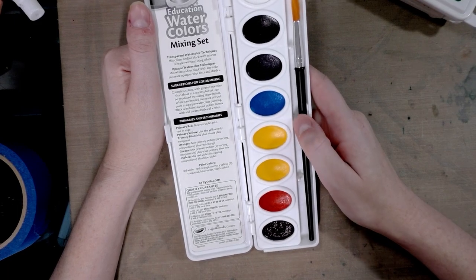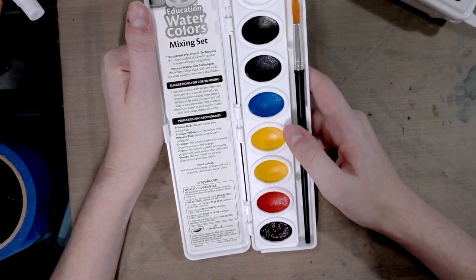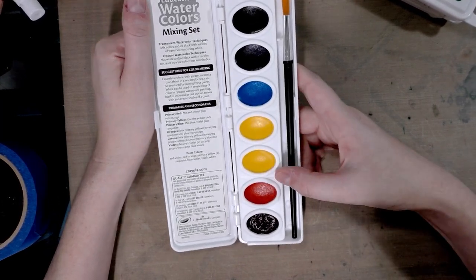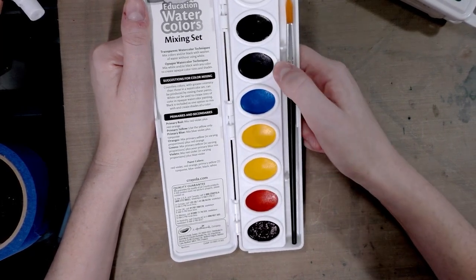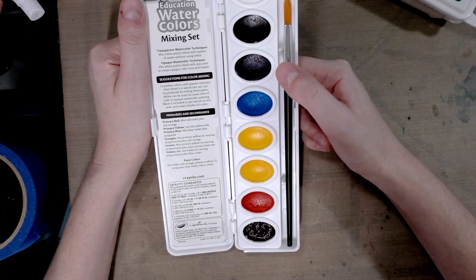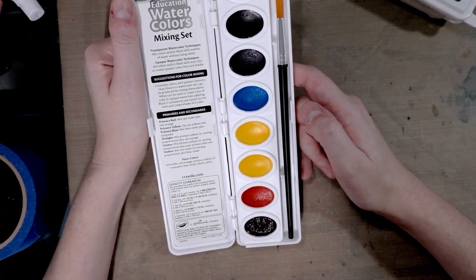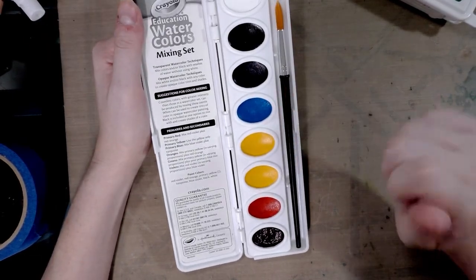Primaries and secondaries. Primary red: Mix red violet plus red orange. Primary yellow: Use the yellow only. I guess one of these two yellows. We're going to find out in a minute. Primary blue: Mix blue violet plus turquoise. So this must be blue violet. So it's purple and then a blue. I'm following along y'all. Little different than I was taught color theory as a watercolorist but we're here.